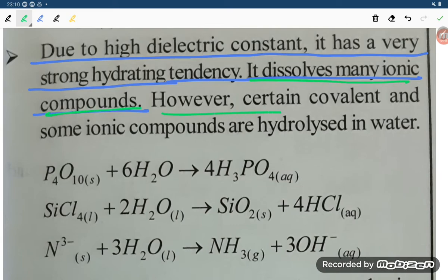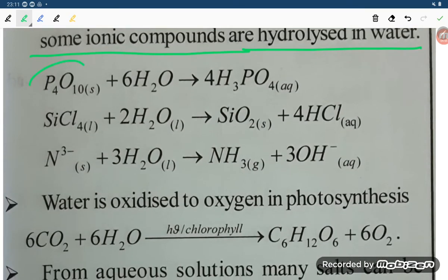However, certain covalent and some ionic compounds are hydrolyzed in water. So P4O10 reacts with six mole of water giving H3PO4. SiCl4 plus two mole of water gives SiO2 plus 4HCl. N3 minus plus 3H2O gives NH3 plus 3OH minus.